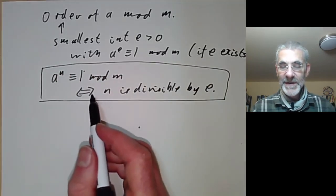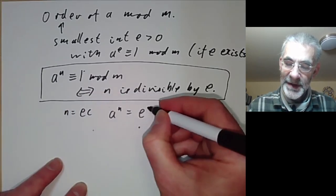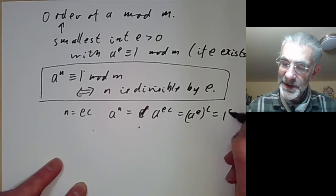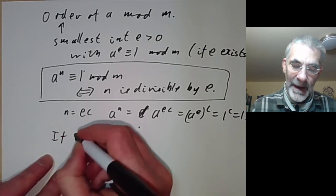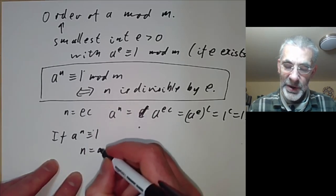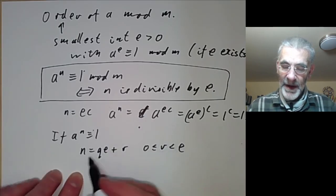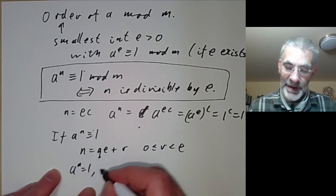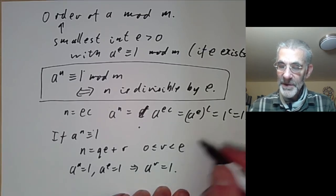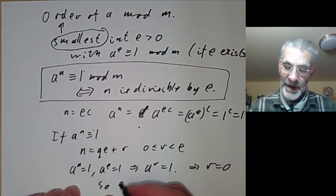We note that a to the n is congruent to 1 modulo m if and only if n is divisible by e. This is fairly obvious: if n equals ec, then a to the n equals (a to the e) to the c, which equals 1 to the c, which equals 1. Conversely, if a to the n is congruent to 1, we write n = qe + r with 0 ≤ r < e, and since a to the e equals 1 this implies a to the r equals 1; since r < e and e was the smallest such integer, r must equal zero, so e divides n.